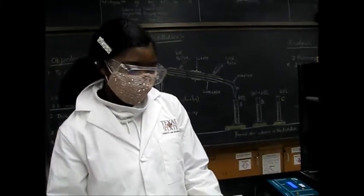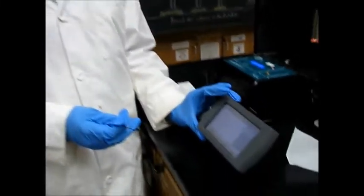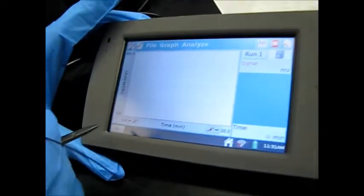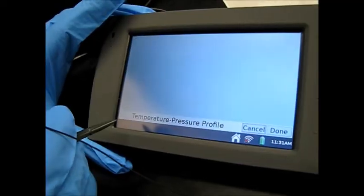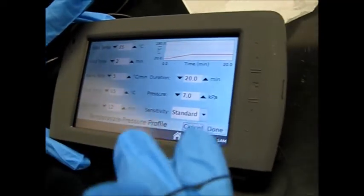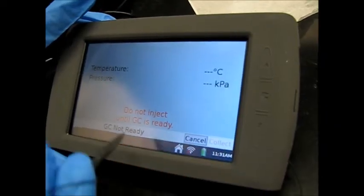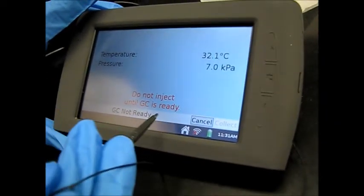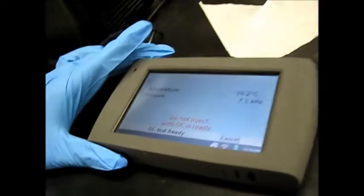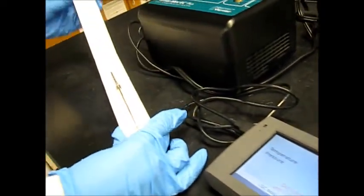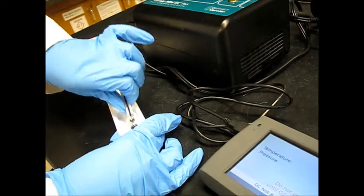So after 15-20 minutes, we're going to come here to get our GC ready. So I'm going to start by pressing play. It's going to pop this up and then I'm going to press done. And now it says do not inject until the GC is ready. So now we're going to wait. While I was doing that, I'm going to grab my syringe and I'm going to clean it and rinse it with my sample.